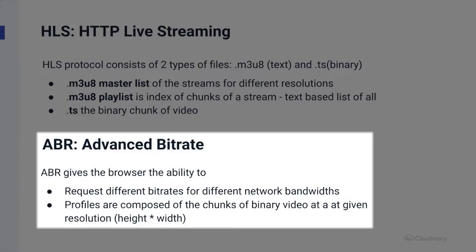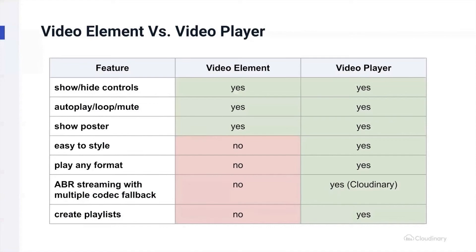ABR, or adaptive bitrate, gives the browser the ability to request different bitrates for different network conditions or bandwidths. Profiles are composed of chunks of video, and each video chunk is given a specific resolution or height and width measurement. In order to make use of adaptive bitrate, we're going to need to install a more robust video player than what's available in the HTML video element.